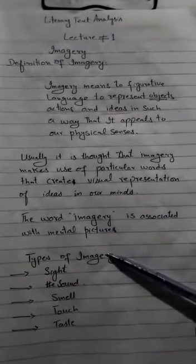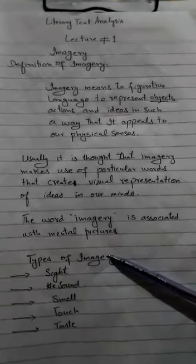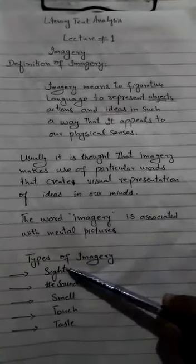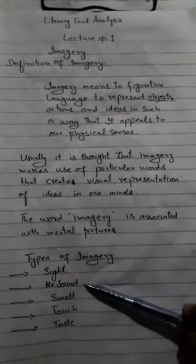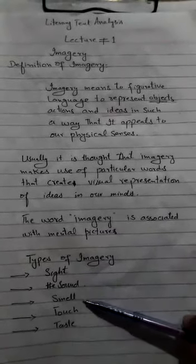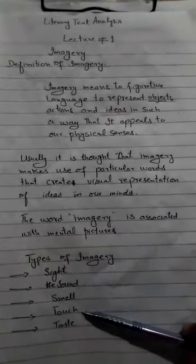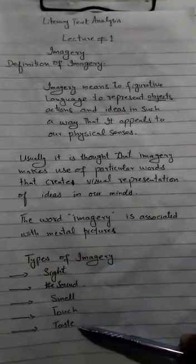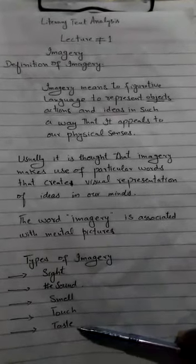Types of Imagery: There are five types of imagery — sense of sight, sense of sound, sense of smell, sense of touch, and sense of taste.